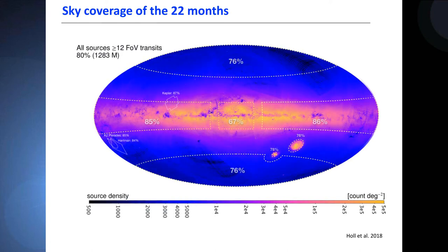Now if we go to 12 field of view transits, we see that some regions are less well covered. We have the bulge region, which is 67 percent complete, and the ecliptic poles of the galaxy at 26 percent.